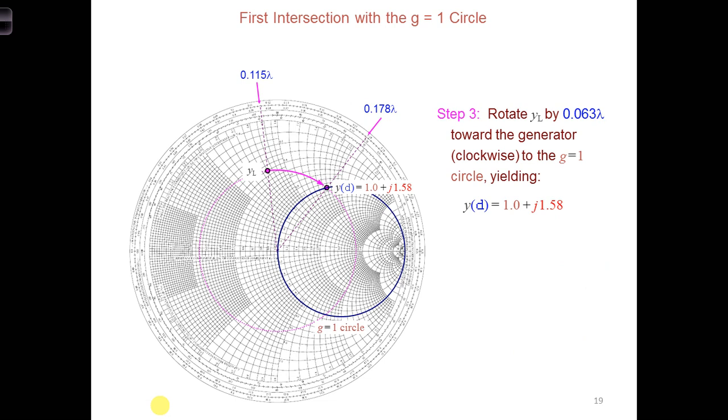So let's go back to the scenario where we considered the first intersection with the G equal 1 circle. That was the more favorable solution. That's a distance 0.063 lambda from the load, and we needed to cancel a positive J1.58 in order to match the load.